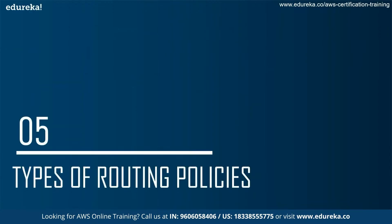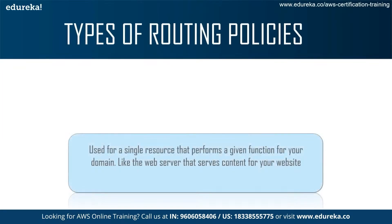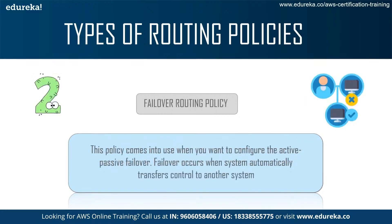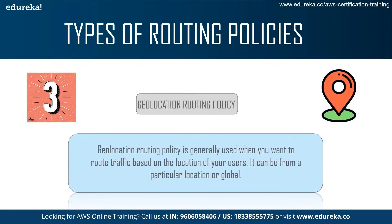Next up, the types of routing policies. The first is the Simple Routing Policy, used for a single resource that performs a given function for your domain, like a web server that serves content for your website. The second is the Failover Routing Policy, which comes into use when you want to configure active-passive failover — failover occurs when your system automatically transfers control to another system.